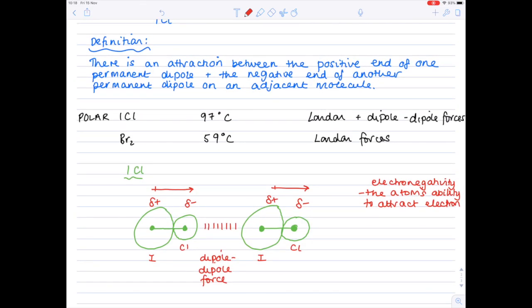And let's just remind ourselves of that definition. There is an attraction between the positive end of one permanent dipole and the negative end of another permanent dipole on an adjacent molecule. And that's exactly what you can see happening here. There's the permanent negative end, there's the permanent positive end, and therefore they're going to attract here.